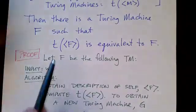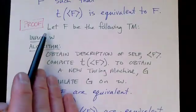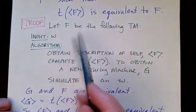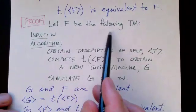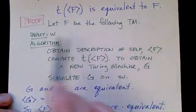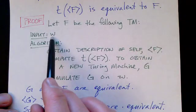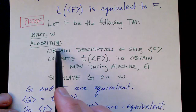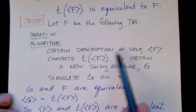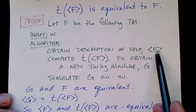The way we prove this is by showing what F is. Let F be the following Turing machine. It takes as input w. Via the recursion theorem, it gets a description of itself.